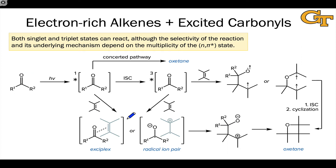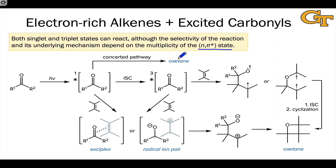The general mechanistic picture for the Paternò-Büchi reaction is fairly complicated, so we'll step through this diagram one step at a time to see how both singlet and triplet states can react and how the multiplicity of the excited state exerts influence over reactivity. We're thinking about the n-π* state of the carbonyl compound exclusively for now. Photo-excitation first generates the singlet state, and there is a concerted pathway leading to the oxetane, possibly through an exciplex, through a traditional pericyclic pathway.